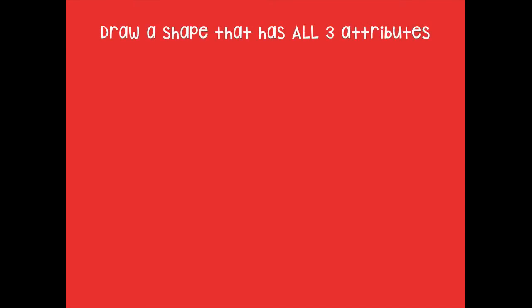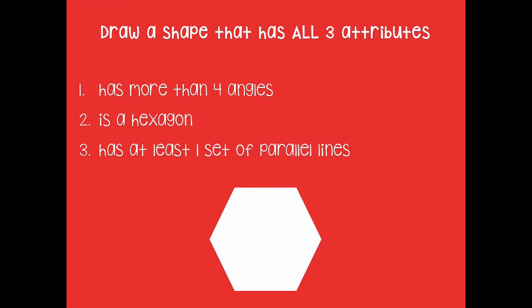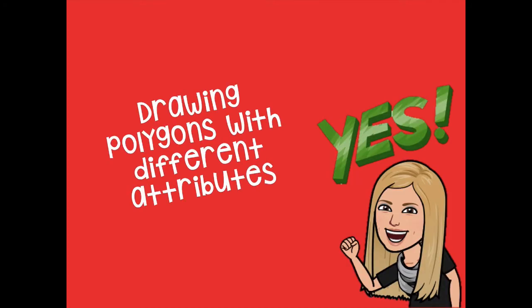Here's another one: draw a shape that has more than four angles, is a hexagon, and has at least one set of parallel lines. Pause the video and draw your shape. Here is my hexagon, friends. Great job drawing polygons with different attributes!